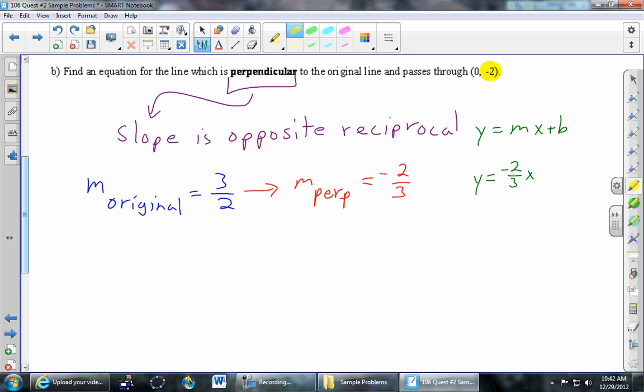Well, same idea. Right there is negative 2. 0 is the x. So that negative 2 must be the value of b, that's the y-intercept we're looking at. So negative 2 thirds x minus 2. Y equals that is the equation of part b.